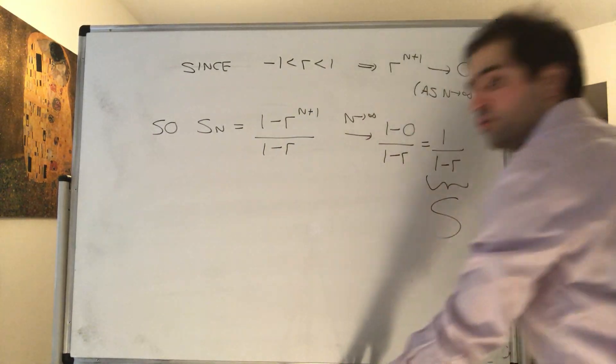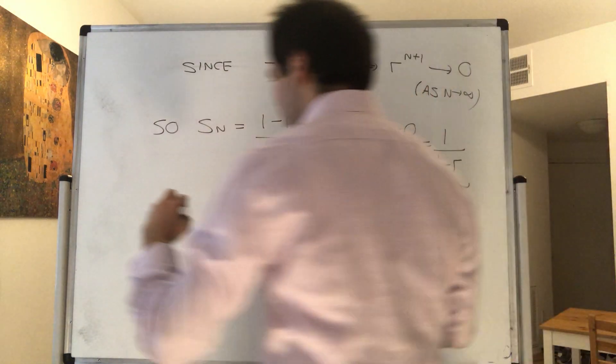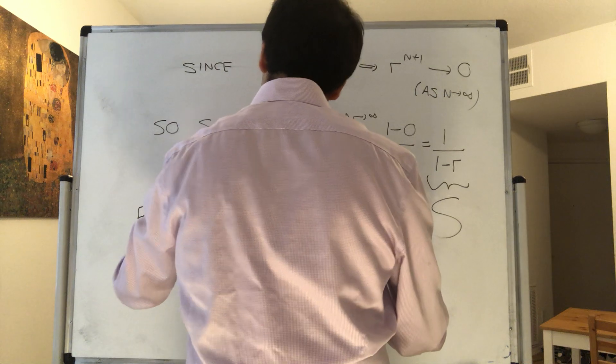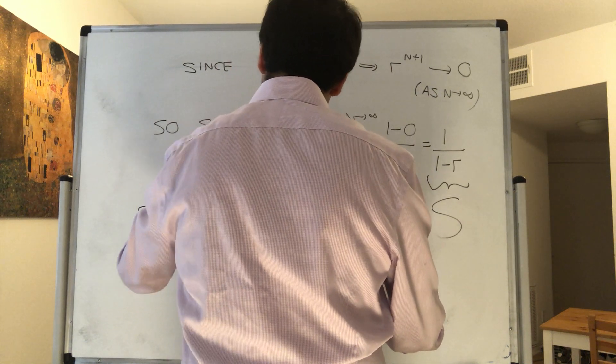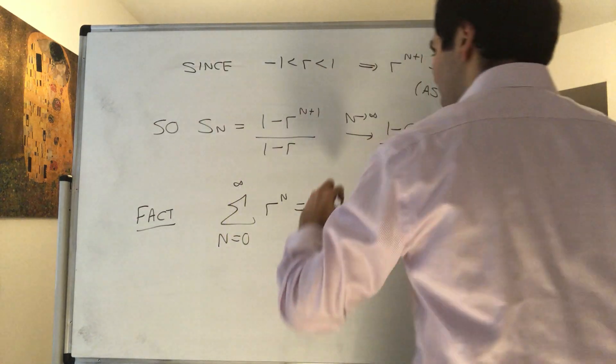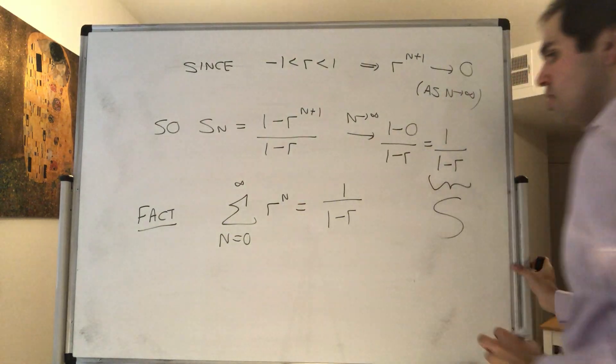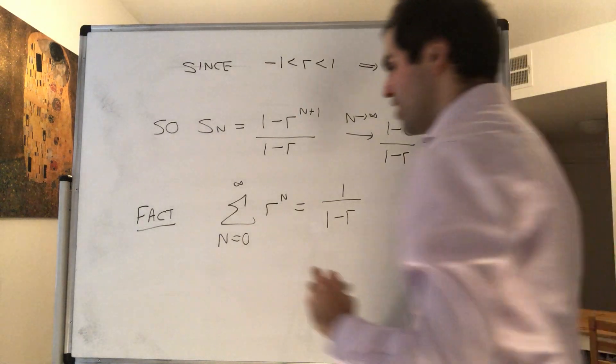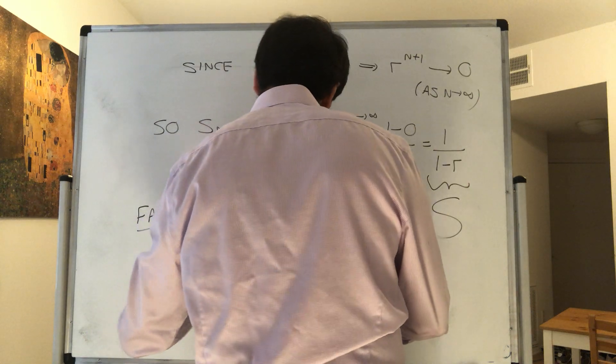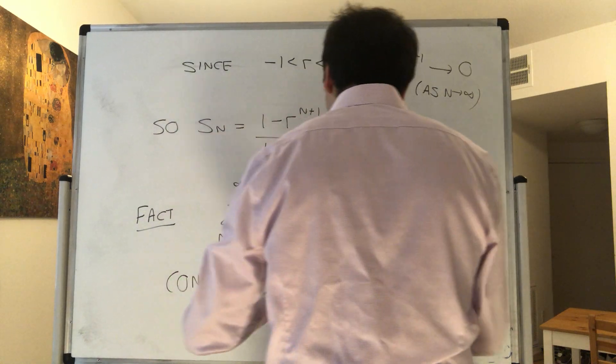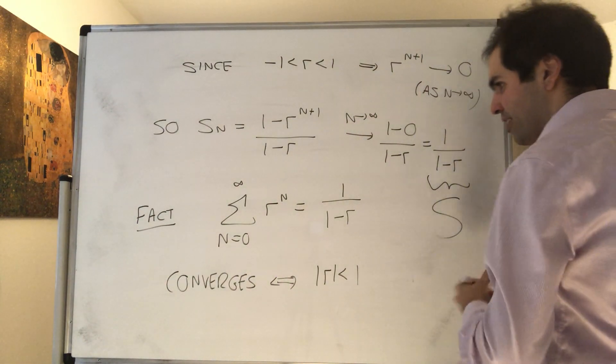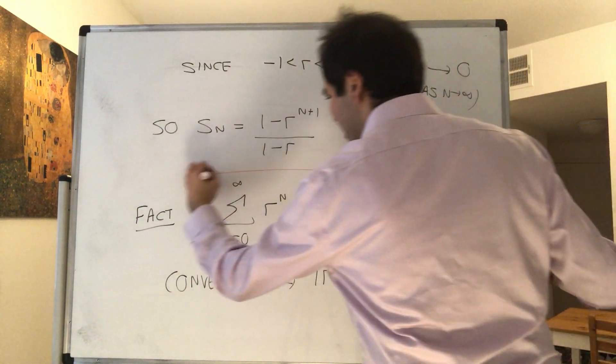Therefore, to summarize, what do we know about the geometric series? So fact: not only is the geometric series, sum from 0 to infinity of r to the n, equal to 1 over (1 minus r), but second important fact that we found: it converges if and only if absolute value of r is less than 1. So that's an important thing to know.